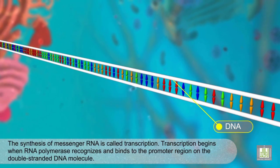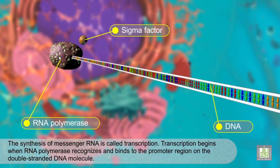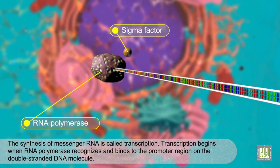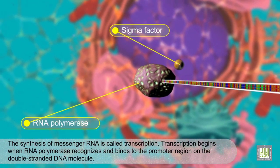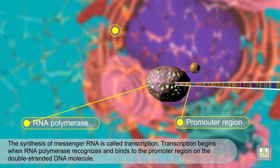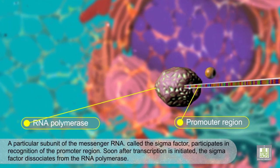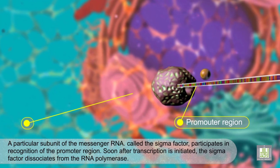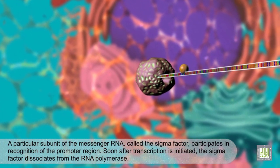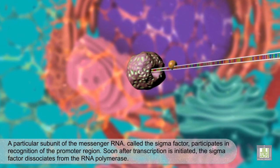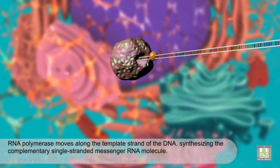The synthesis of messenger RNA is called transcription. Transcription begins when RNA polymerase recognizes and binds to the promoter region on the double-stranded DNA molecule. A particular subunit of the RNA polymerase, called the sigma factor, participates in recognition of the promoter region. Soon after transcription is initiated, the sigma factor dissociates from the RNA polymerase.